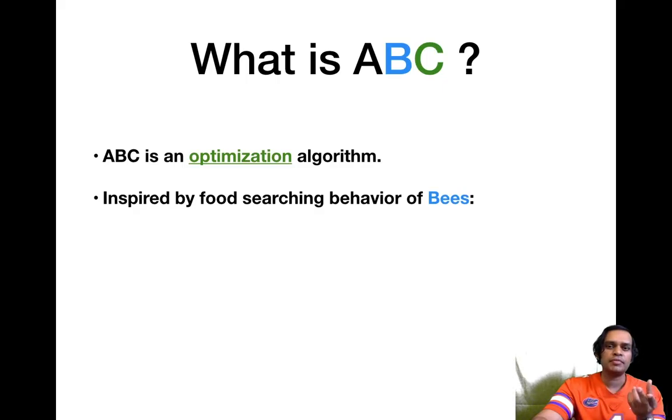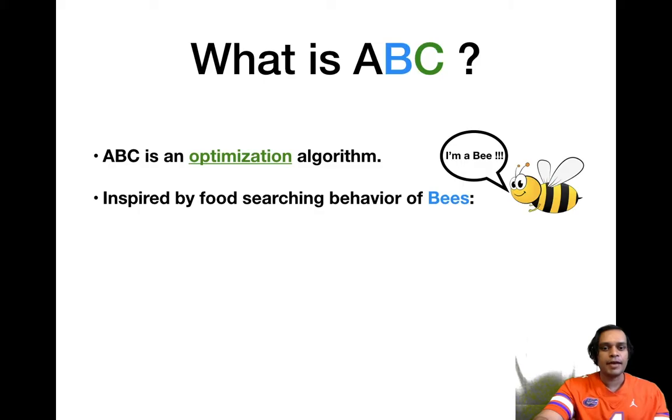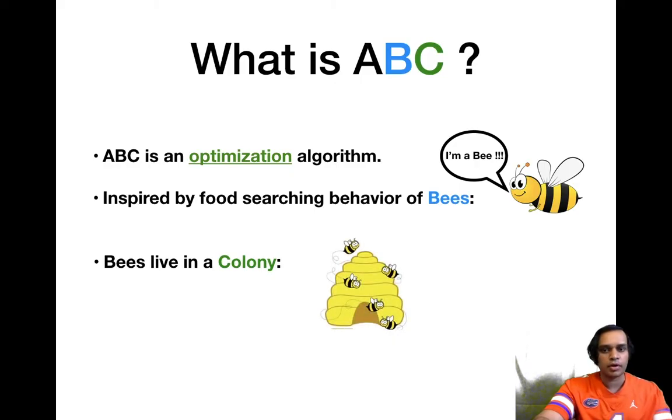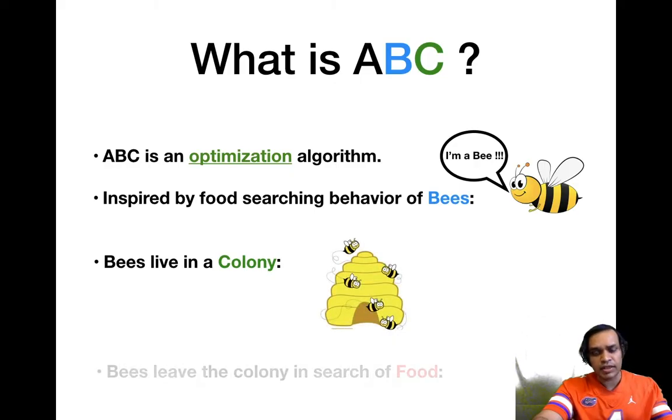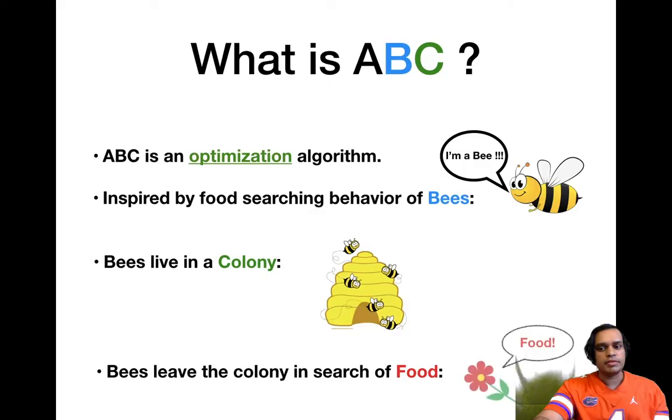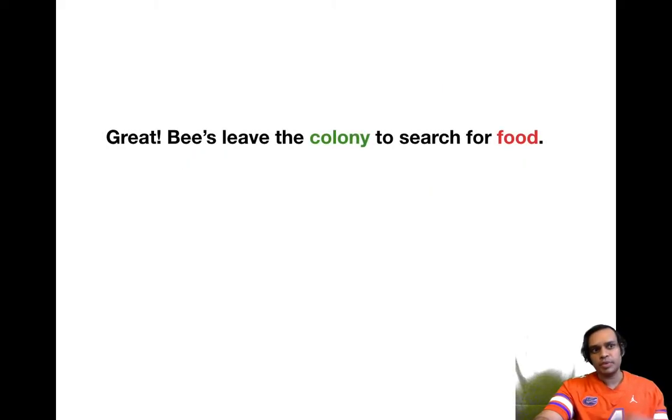How bees go about and search and find food - that is the inspiration for this algorithm. So where do our bees live? Bees live in a colony. The bees leave the colony and they go out and search for food. And there's an example of food over there - it's a flower.